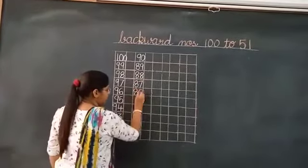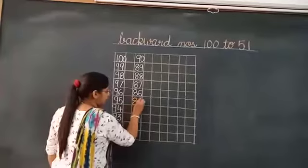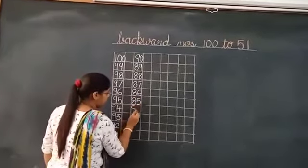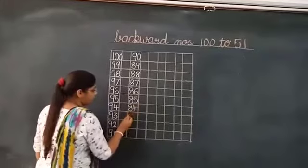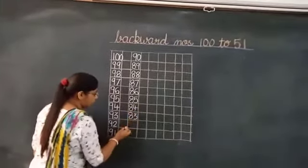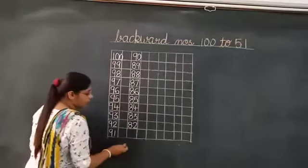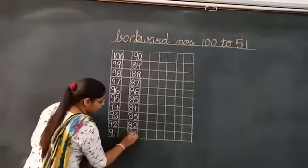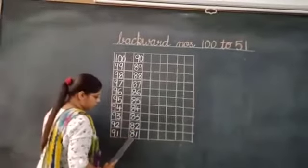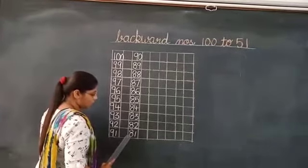87, 86, 85, 84, 83, 82, 81. Look at here children. Which number will come before 81?